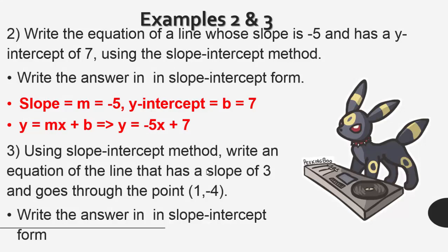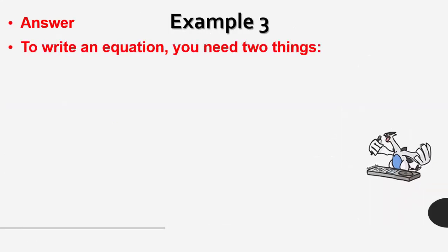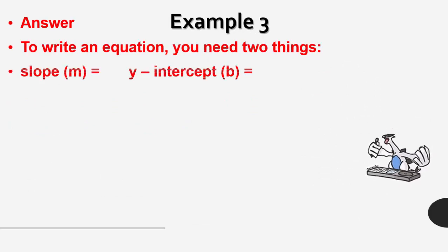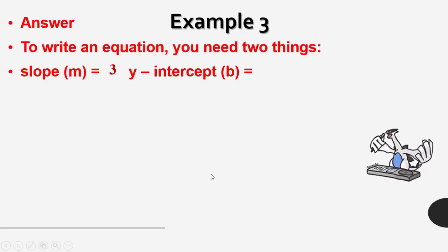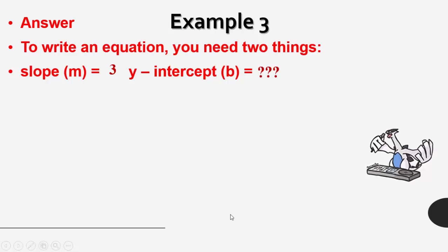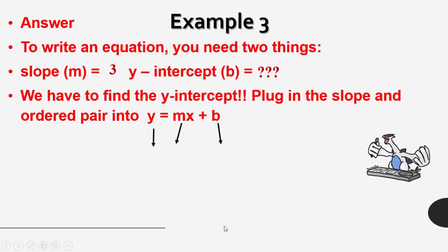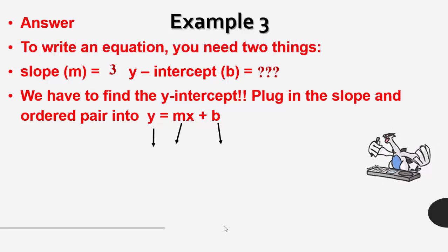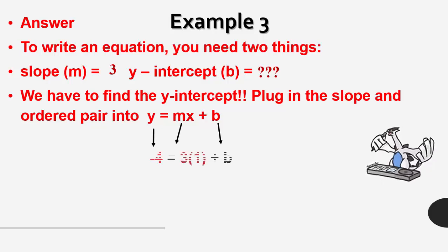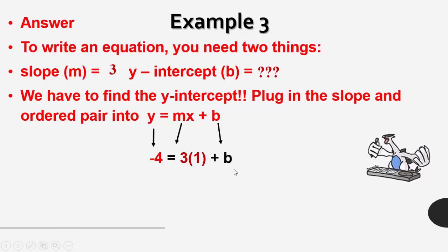Reviewing what we just did on the whiteboard: to write an equation, you need two things — the slope M and the y-intercept B. In our case, the slope was equal to 3, but we didn't know the y-intercept because we were only given an arbitrary point. So we had to find the y-intercept by plugging the slope and the point into y is equal to Mx plus B in order to solve for B.